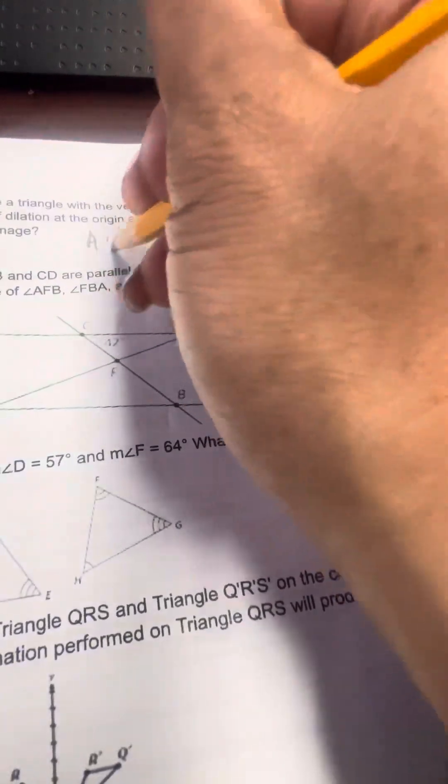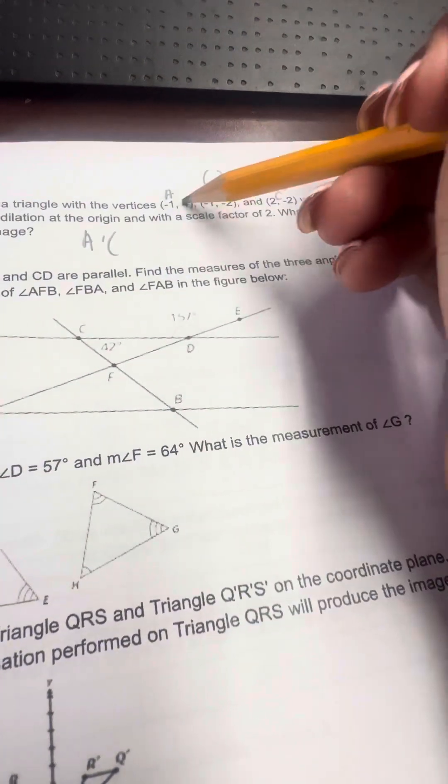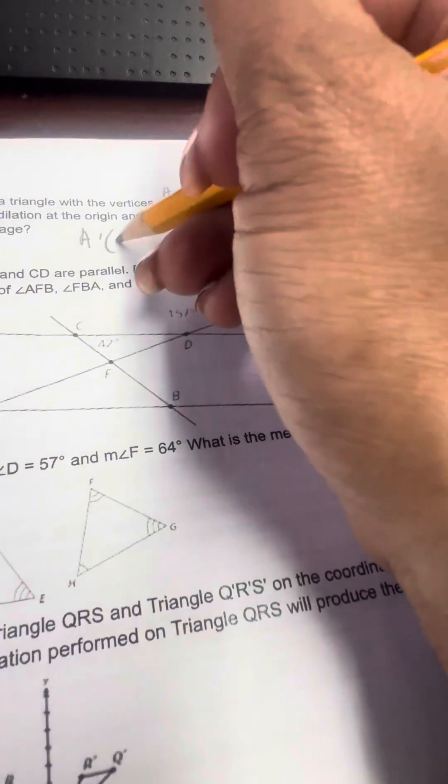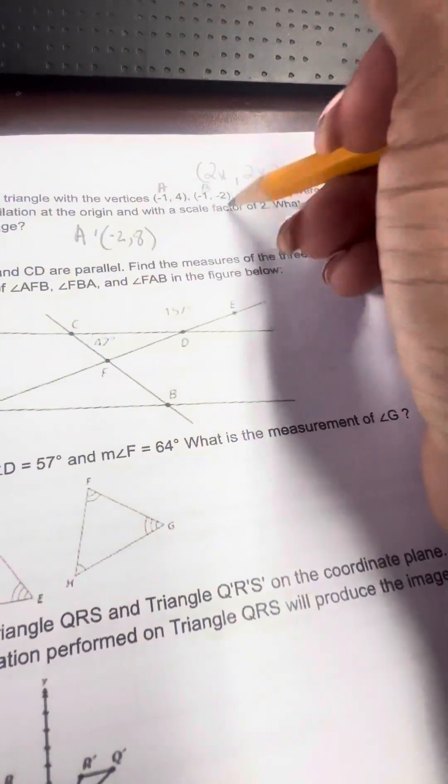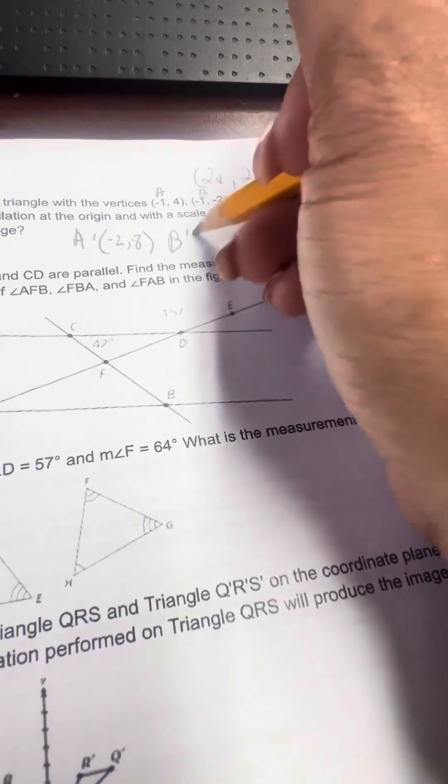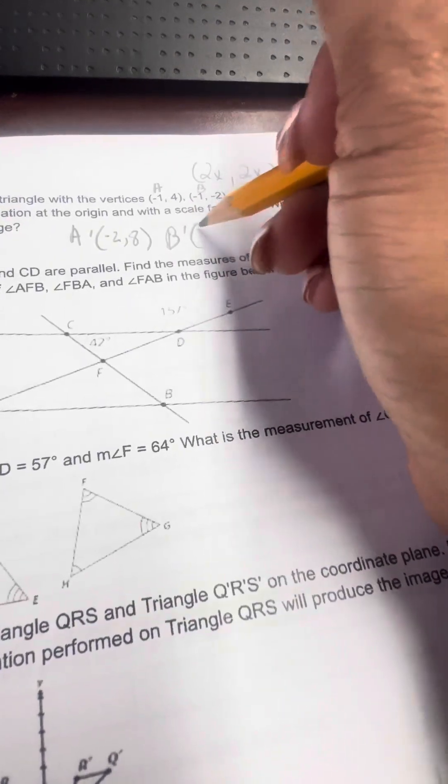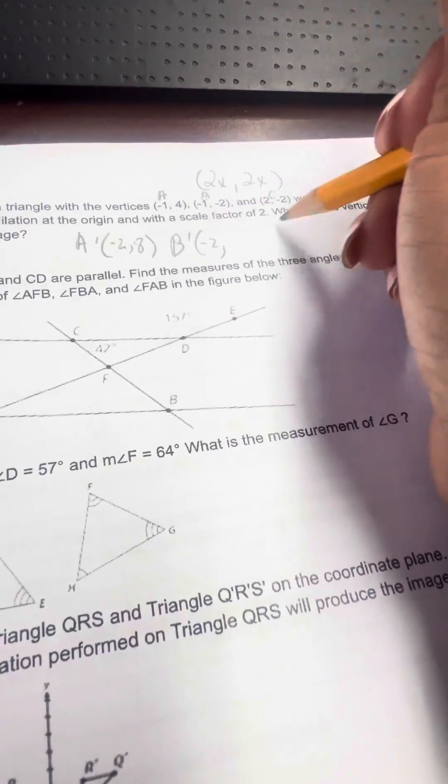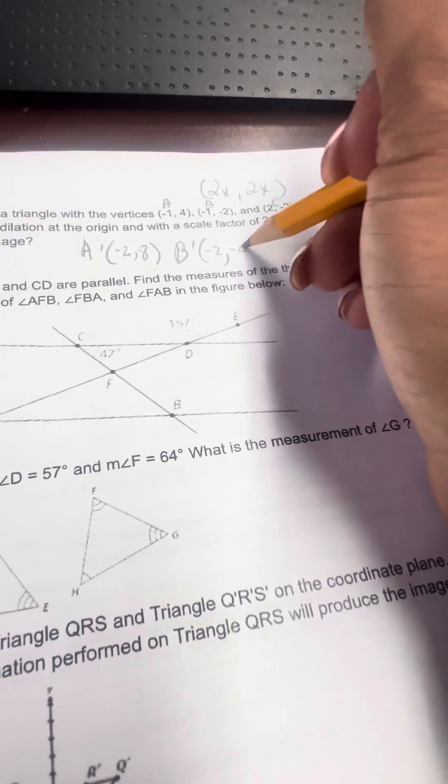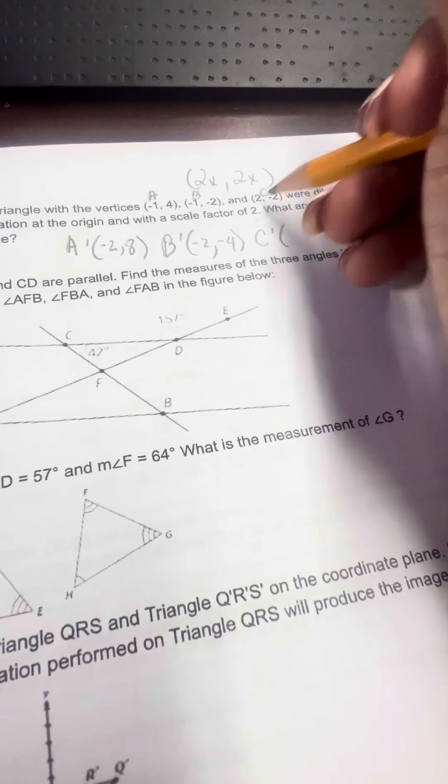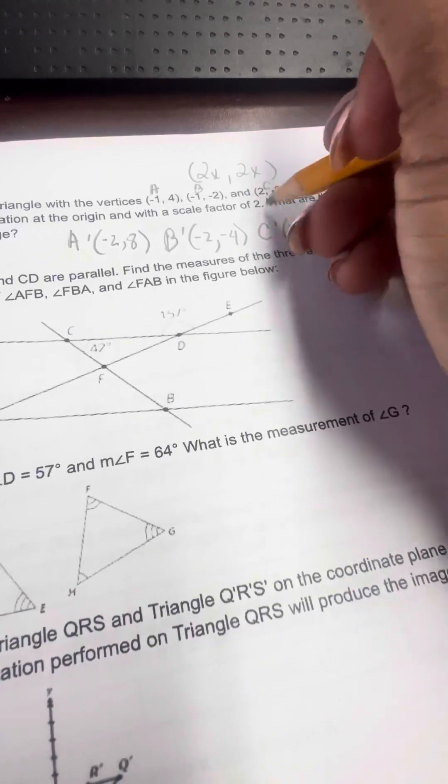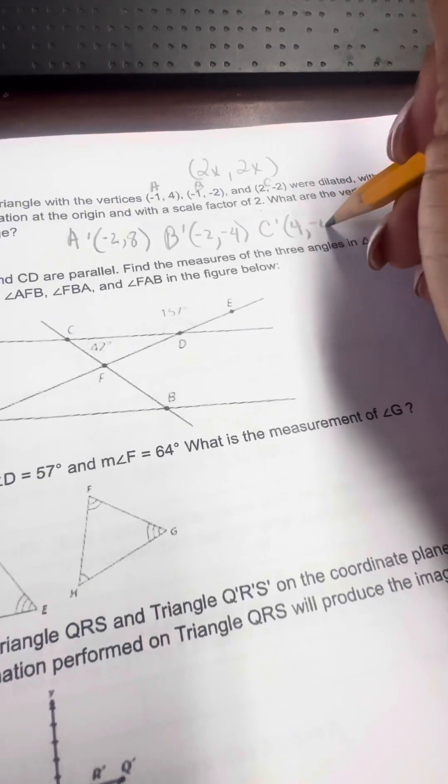So A prime will be 2 times negative 1 is negative 2, and 2 times 4 is 8. For B prime, 2 times negative 1 is negative 2, 2 times negative 2 is negative 4. For C prime, you have 2 times 2 is 4, 2 times negative 2 is negative 4.